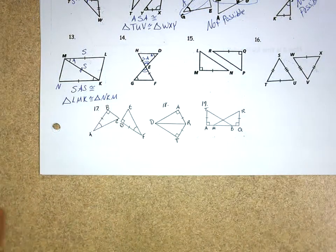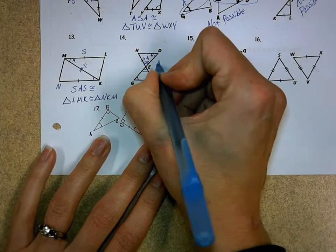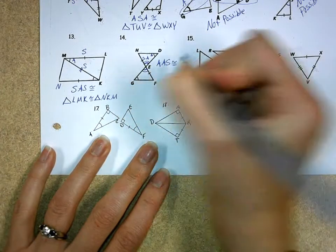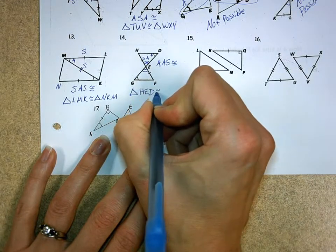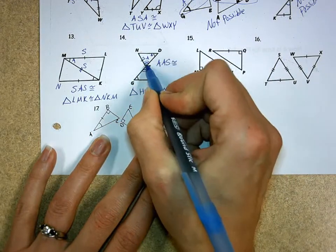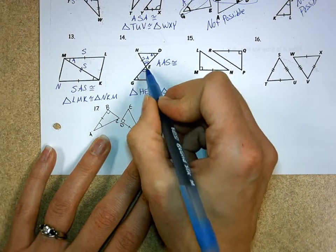Now, some of you said, well, that's side, angle, angle. Well, we always understand it to be in this form. So, let's write our two triangles. I'm going to go triangle HED is congruent, so I go HED is congruent to triangle FEG.